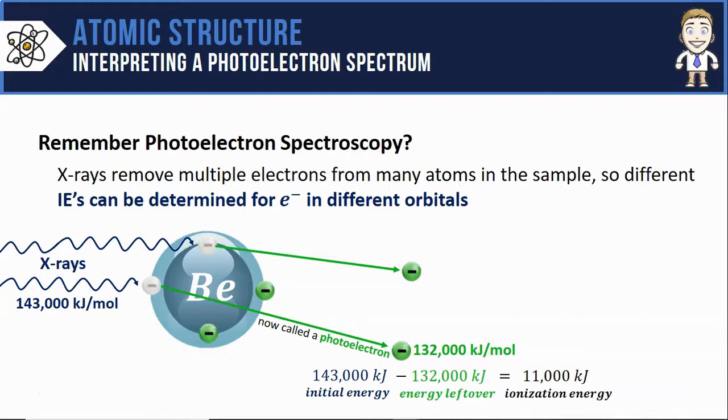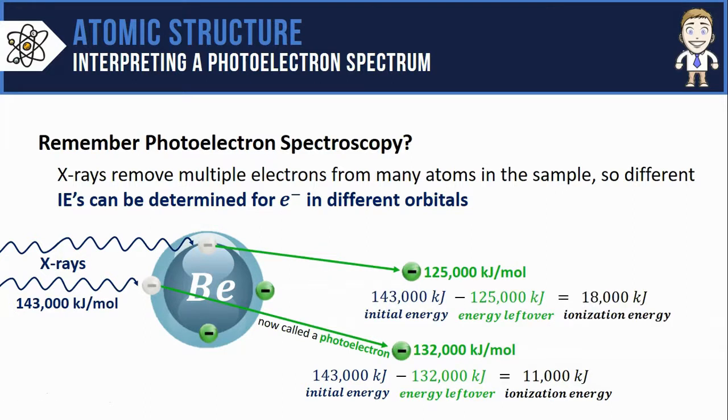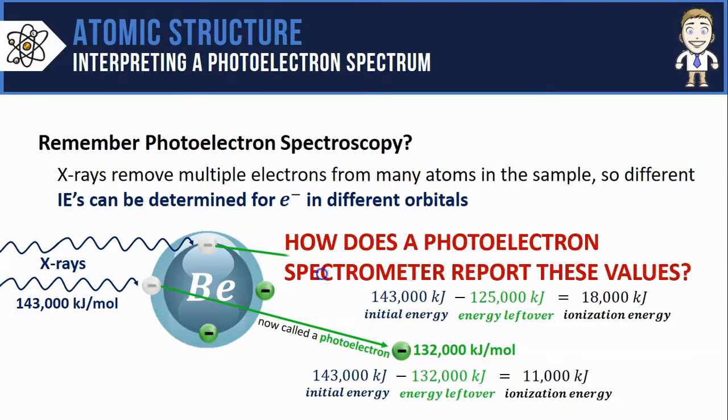And if those same x-rays were used to remove this inner electron, it might only have 125,000 kJ after it's been removed because it took 18,000 kJ of energy to remove that one. In this video, we'll take a look at how a photoelectron spectrometer reports these ionization energy values.